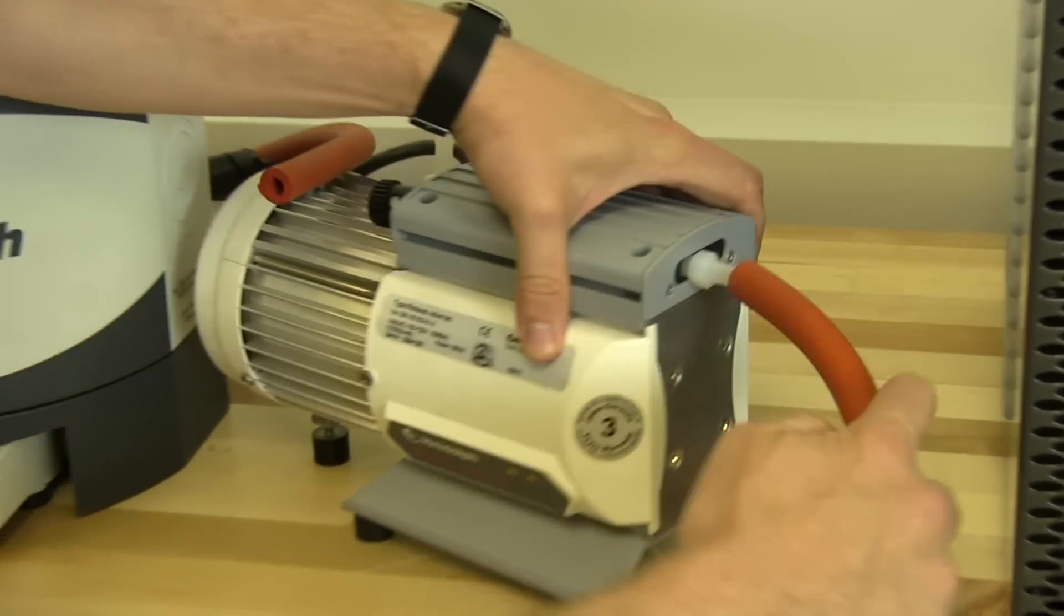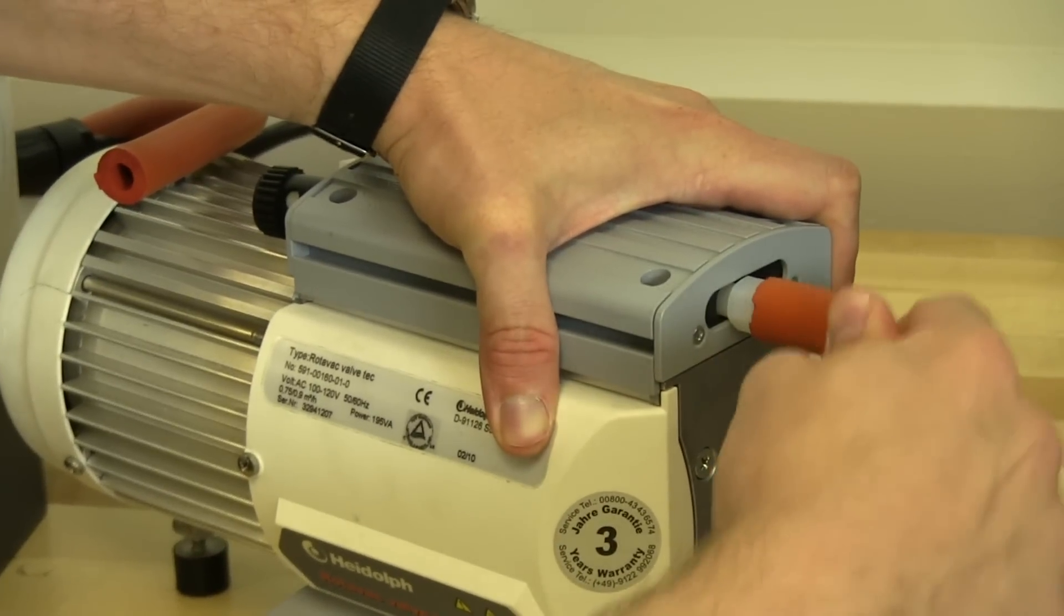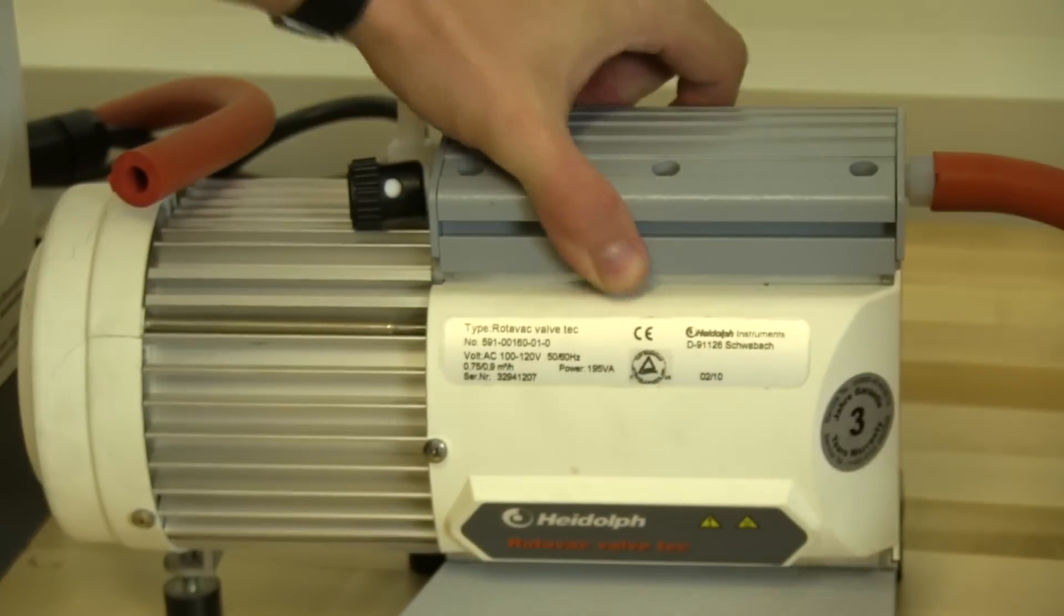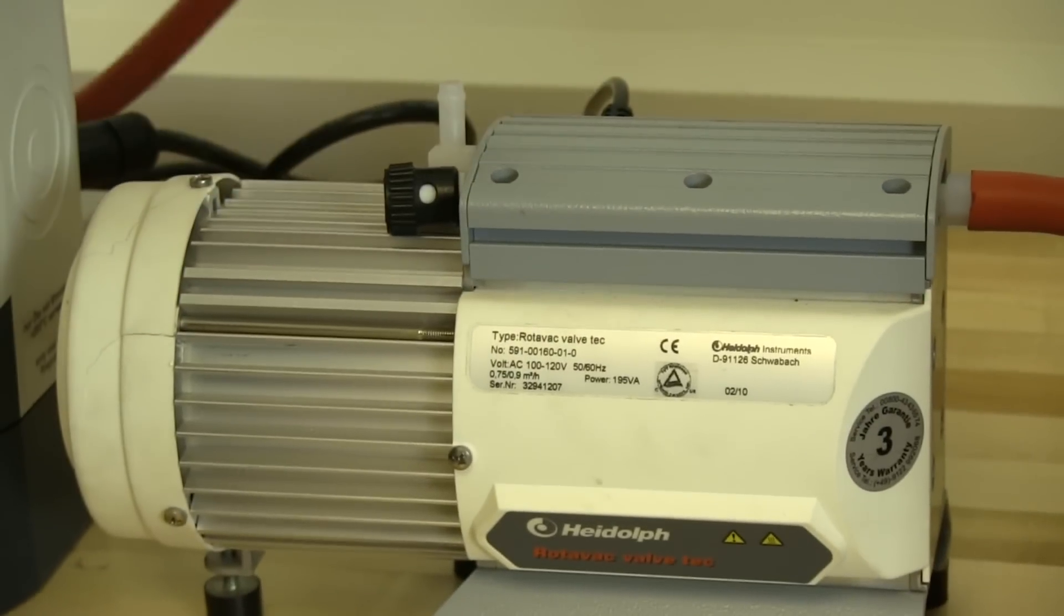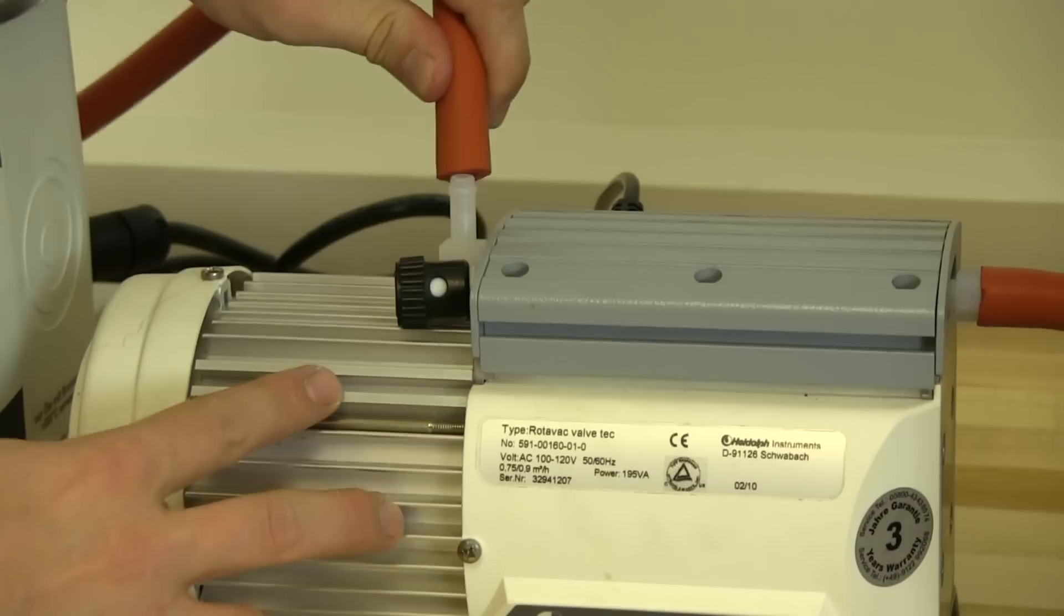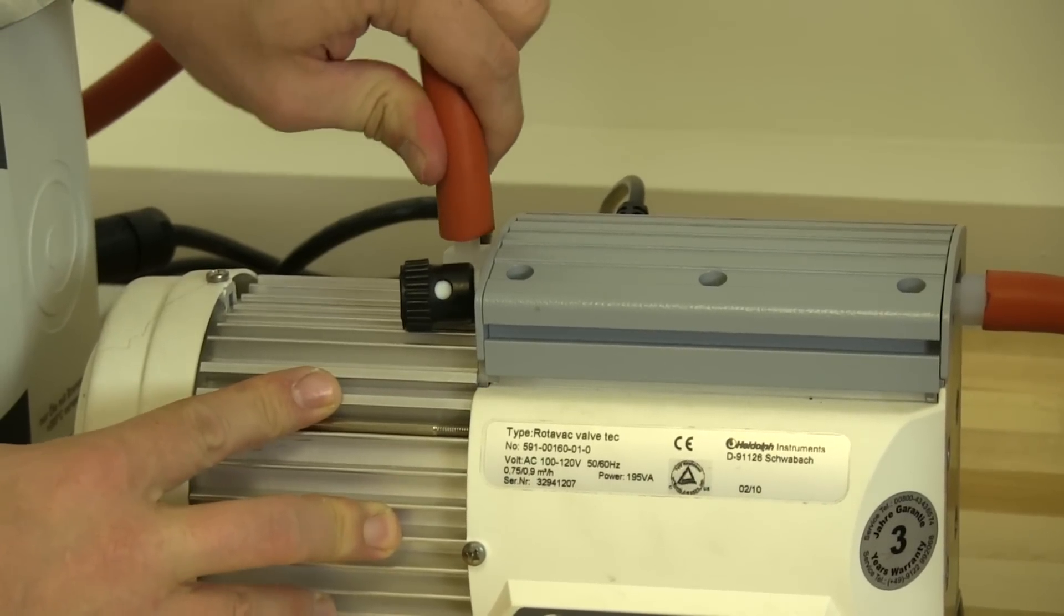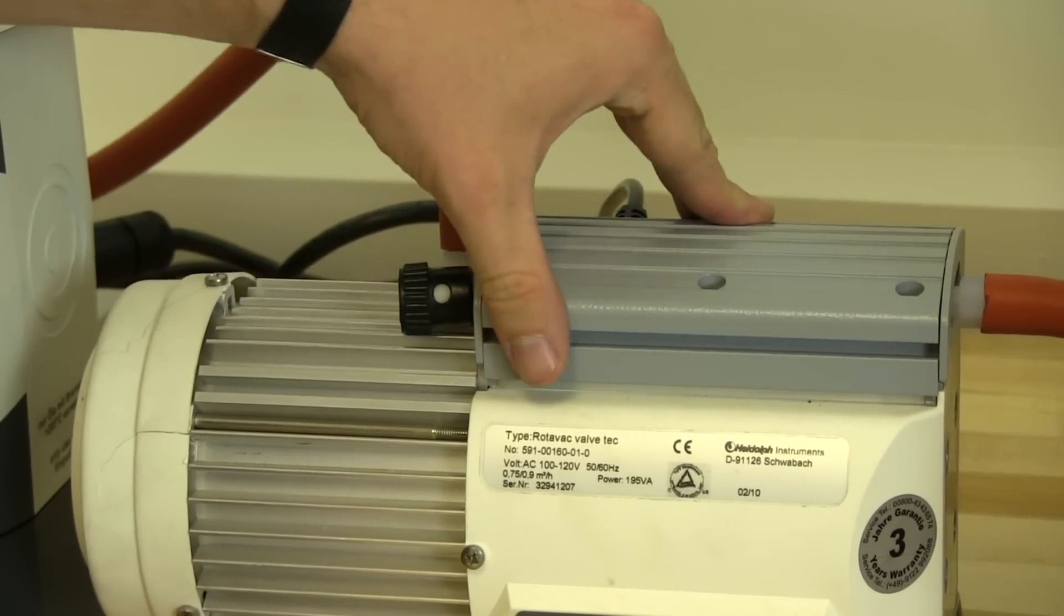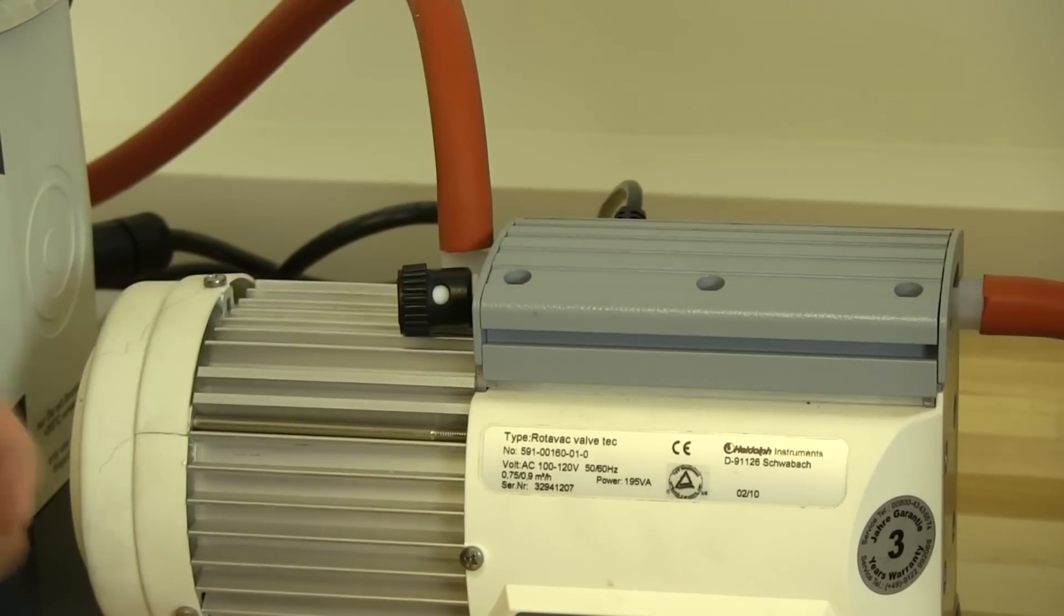So it just fits on, doesn't have to be clamped or anything. And then vacuum tubing onto the inlet, and that's going to connect to the glassware.